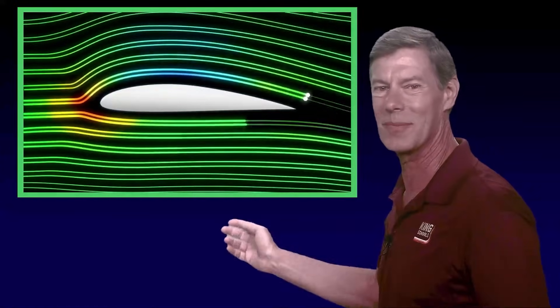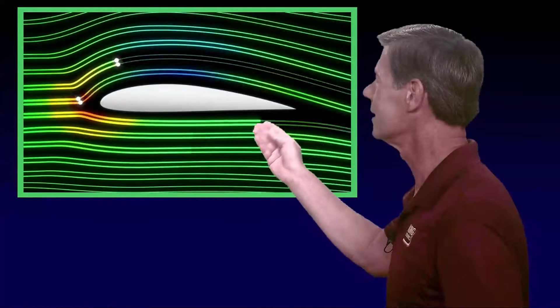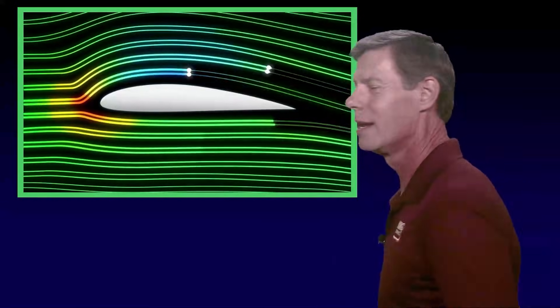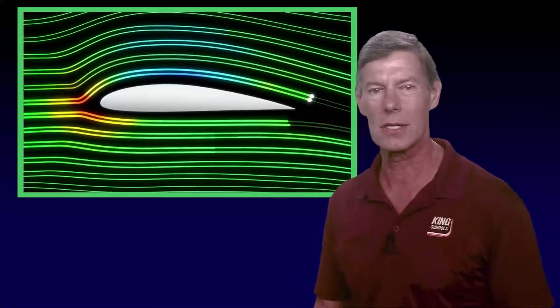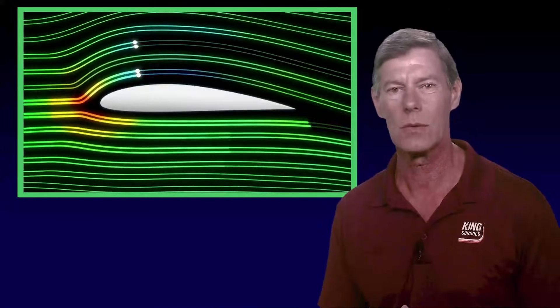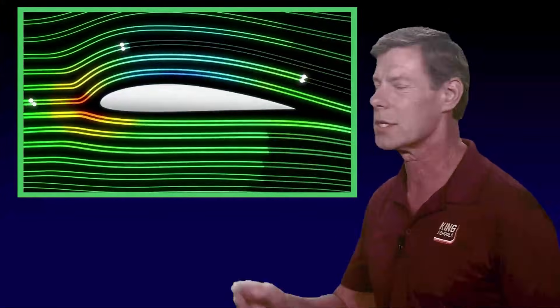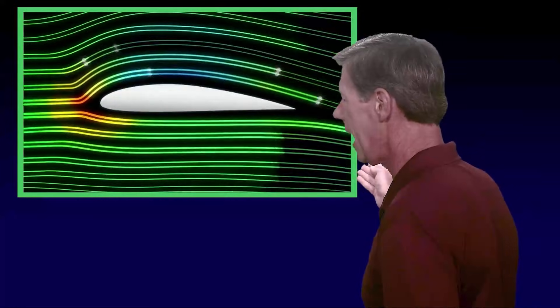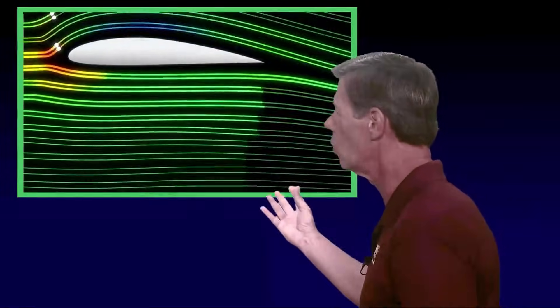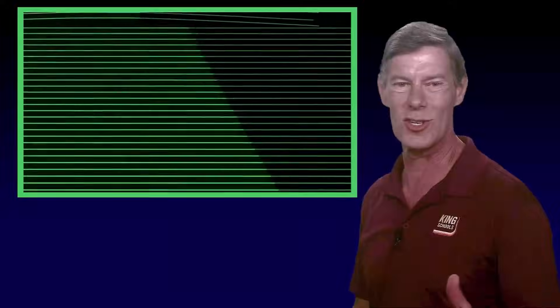Remember viscosity? That creates something called downwash. Next, Newton's third law states that for every action, there's an equal and opposite reaction. When the wing pushes air downward, which is the action, the air pushes the wing upward, which is the reaction.